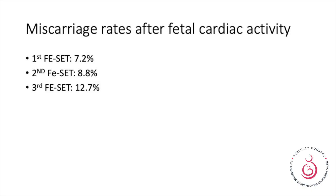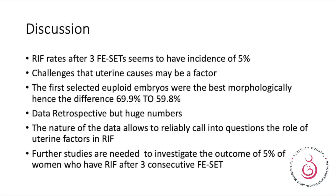The miscarriage rate, even with euploid embryos, continues at between 7.2% and 12.7%. Going back to the original question — what is the incidence of recurrent implantation failure? — this study suggests it is 5%. This challenges the role of the uterus and questions whether you need extensive uterine investigations after the first or second failed cycle.